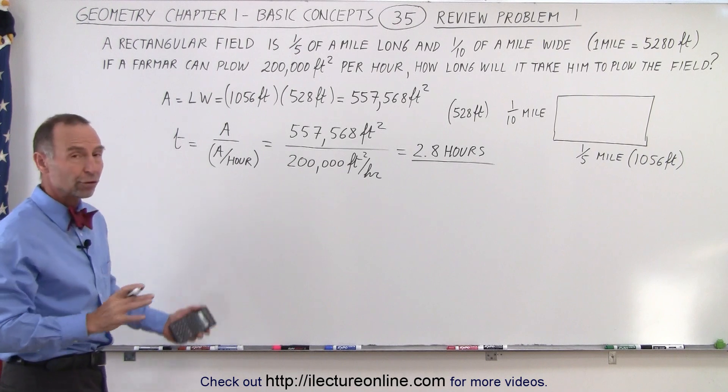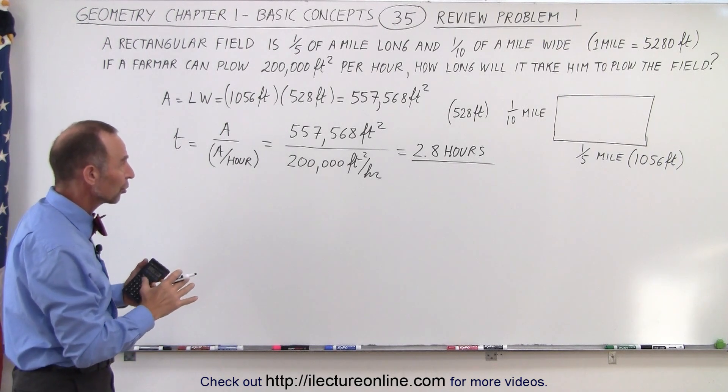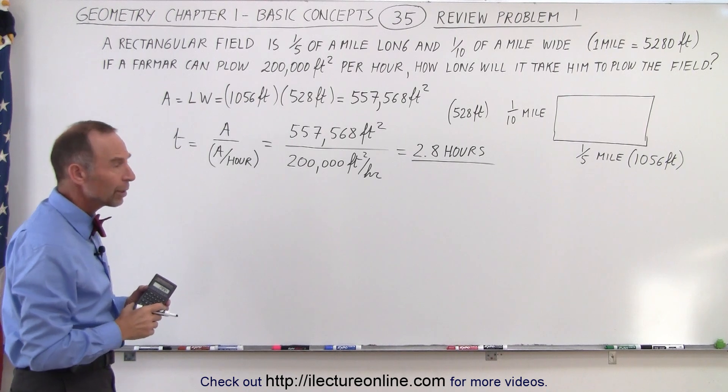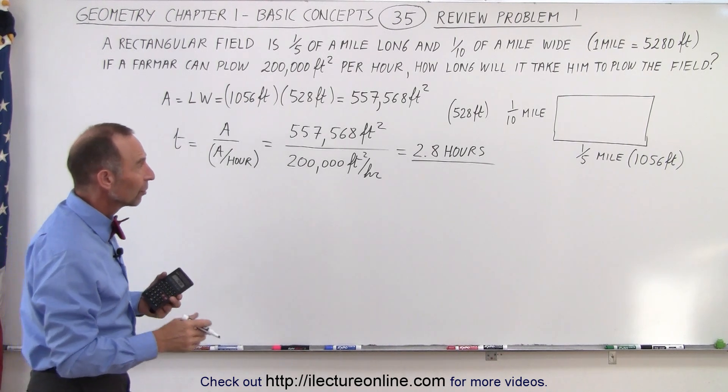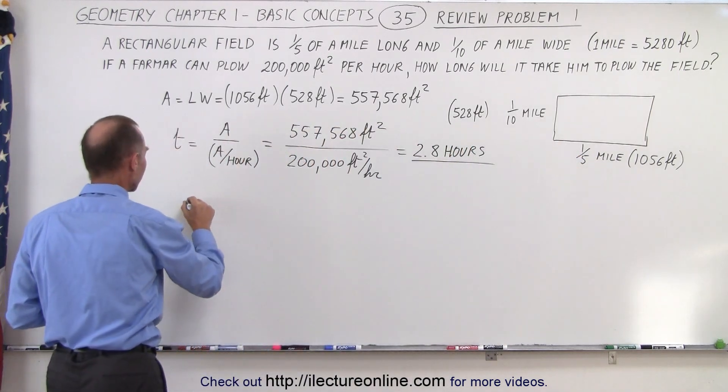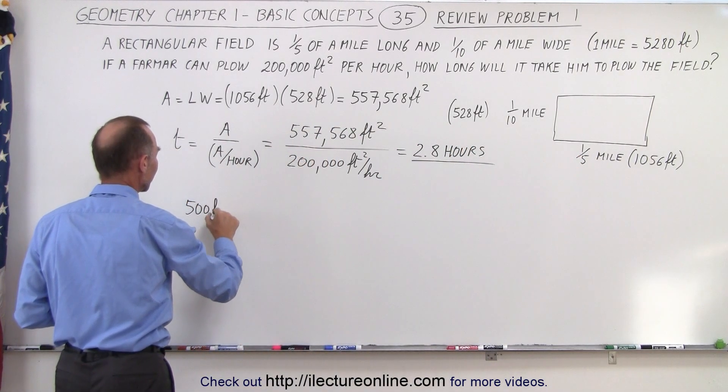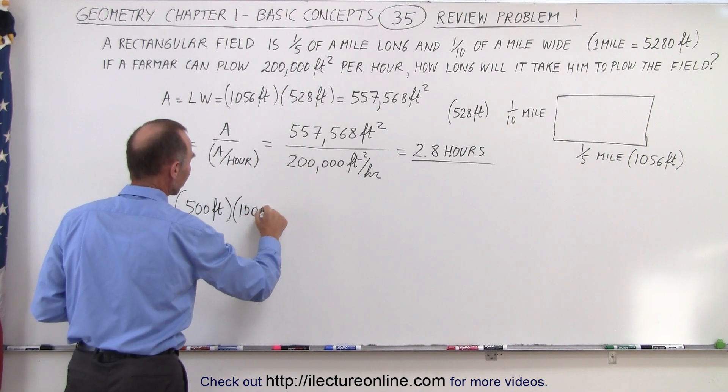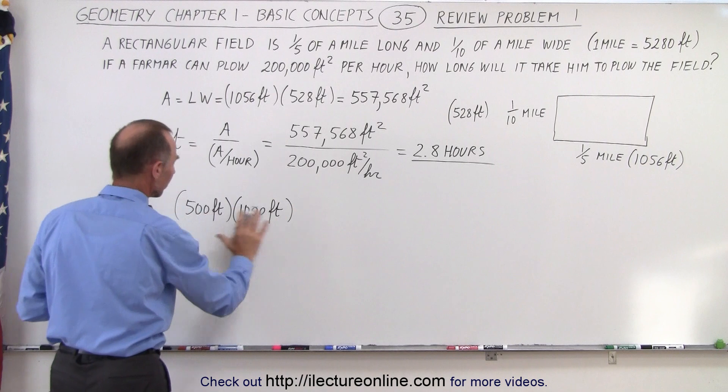Now, if you're not sure if you did this correctly and you want to make sure you got close to the expected answer, we can simplify it with turning this into 500 feet and that into 1,000 feet. So here we say that if we have a field that's 500 feet, which is approximately 528, and we multiply that times 1,000 feet. So we take round numbers.